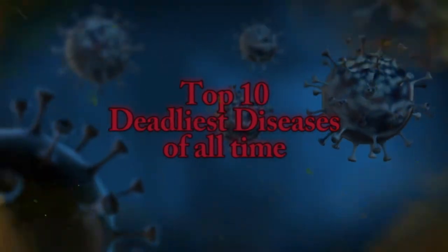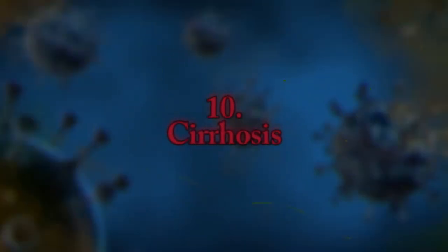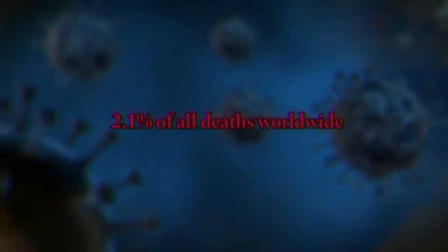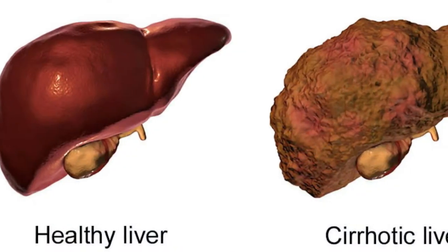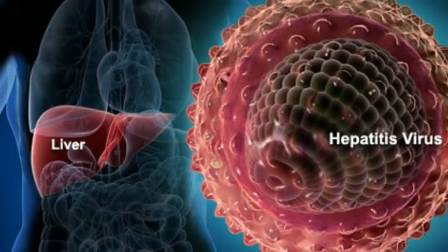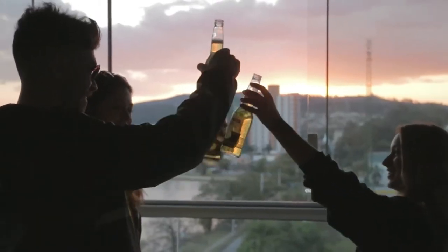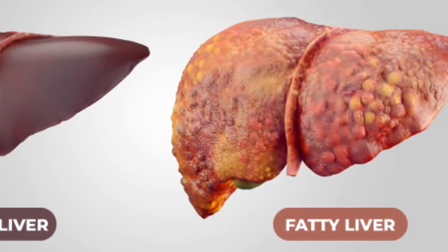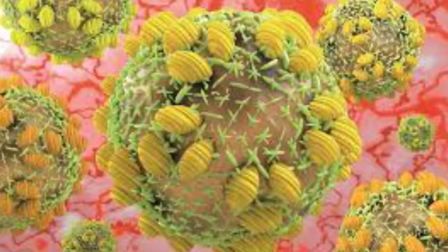Number 10: Cirrhosis. Accounting for 2.1% of all deaths worldwide, cirrhosis is caused by chronic damage to the liver from kidney disease, hepatitis, or chronic alcoholism. Risk factors include chronic alcohol abuse, non-alcoholic fatty liver disease, and chronic viral hepatitis. The complications of cirrhosis cause a million deaths per year, and mortality rates increased from 905,000 in 2000 to 1.2 million in 2015.